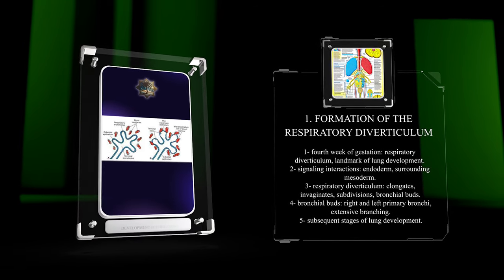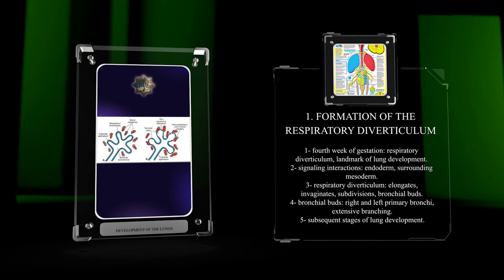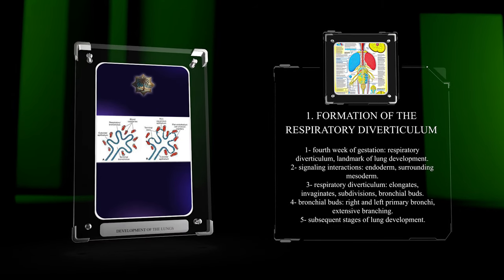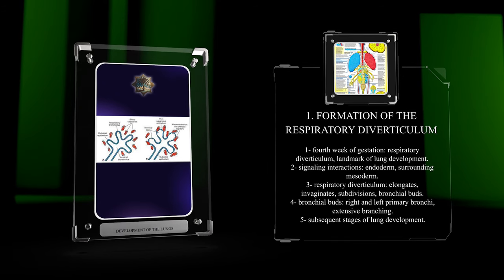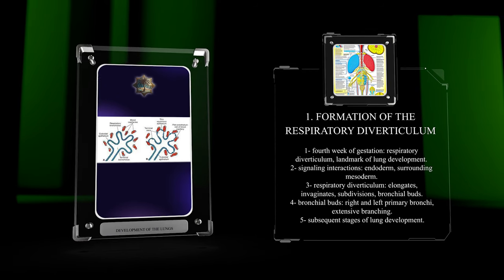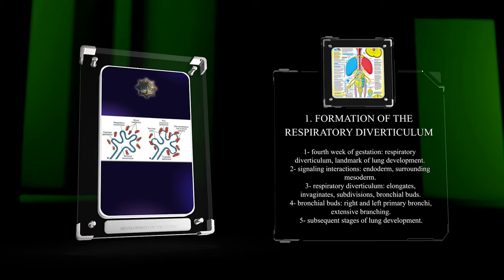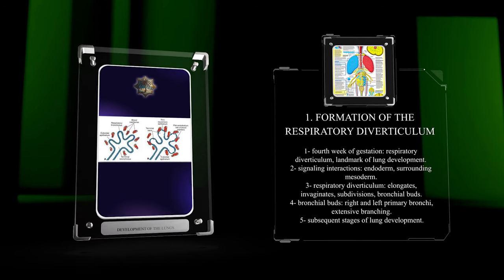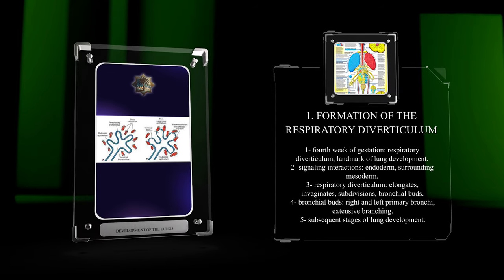As the respiratory diverticulum elongates, it invaginates into the surrounding mesenchyme and undergoes subsequent subdivisions, eventually forming the two main bronchial buds. These buds will give rise to the future right and left primary bronchi, which will continue to branch extensively throughout the subsequent stages of lung development.